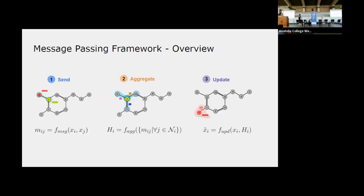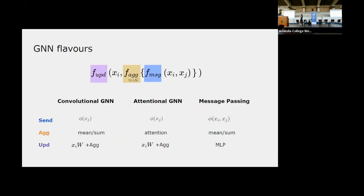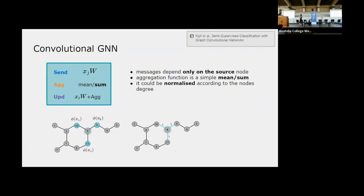So this is the entire message passing framework: compute a message between each pair of connected nodes as a function of their representations, aggregate the messages for each node from its neighborhood, and then integrate the aggregated message into the node's original representation. Depending on how we instantiate the update, aggregate, and message functions, we discover different architectures. Three popular ones are graph convolutional network, graph attention network, and message passing neural network.